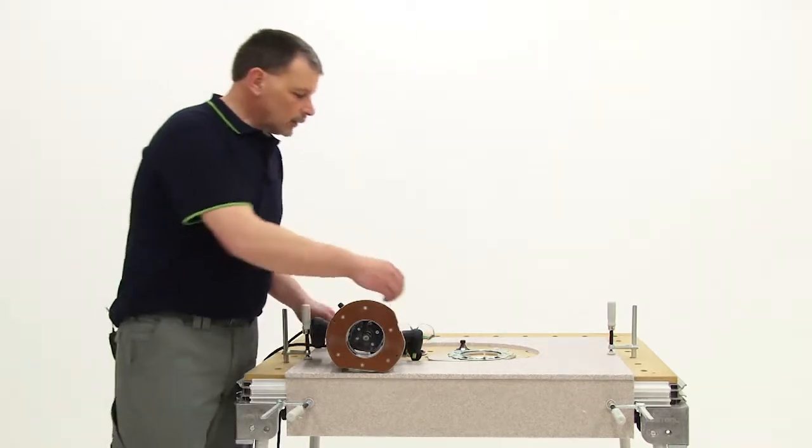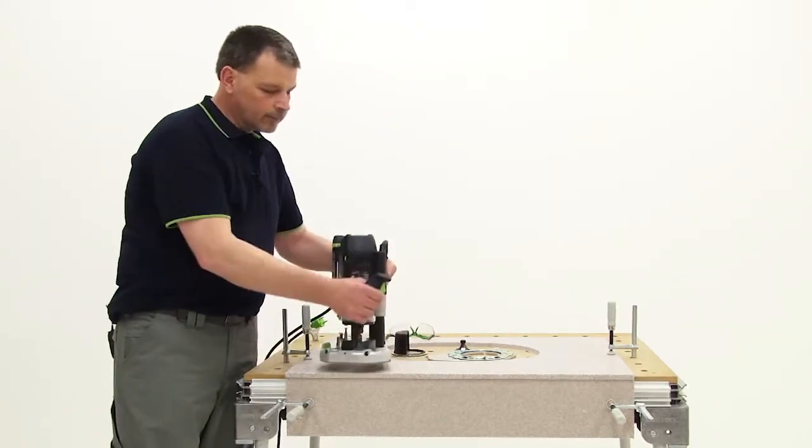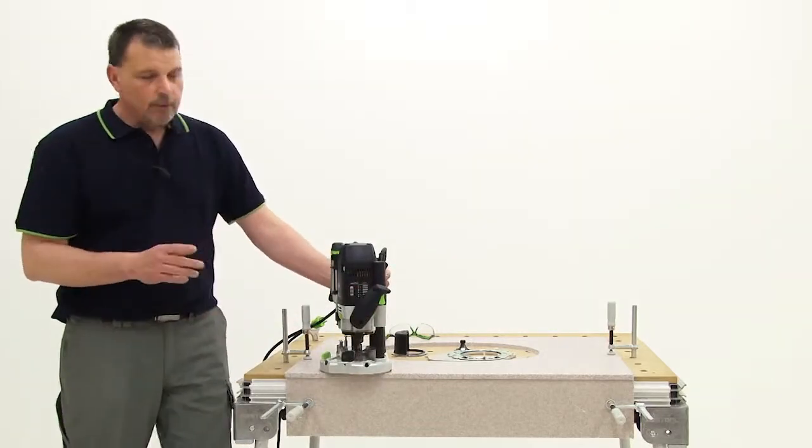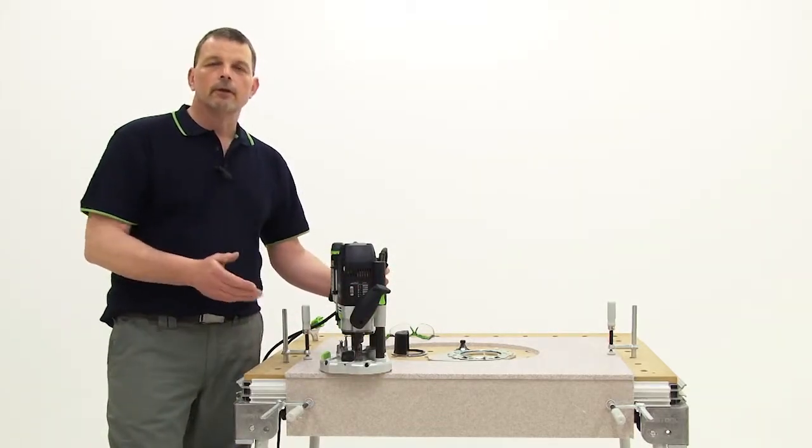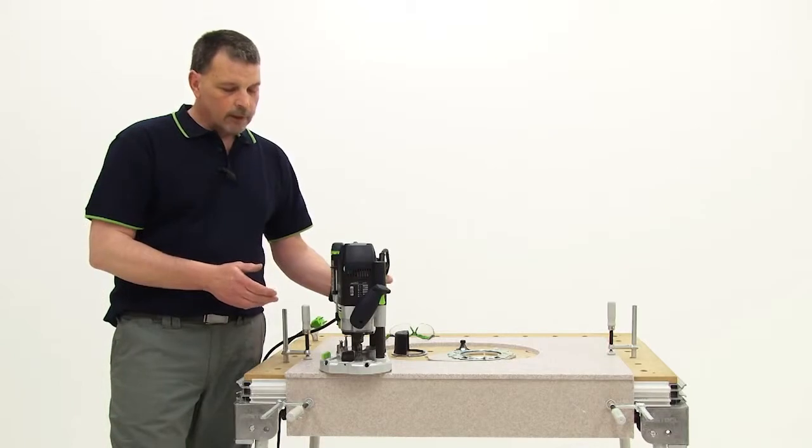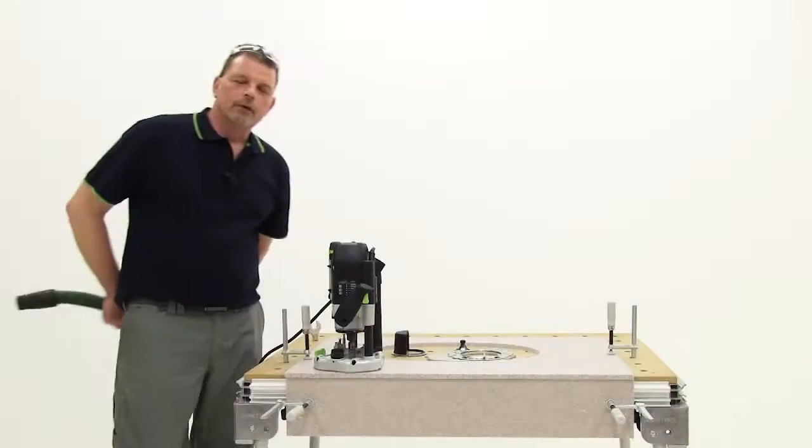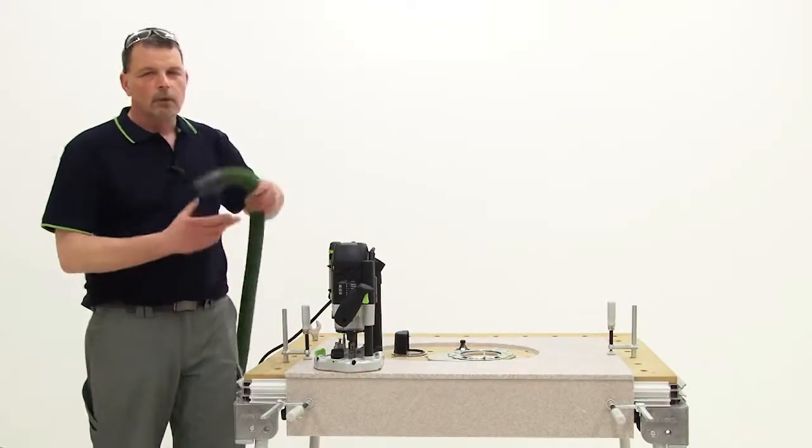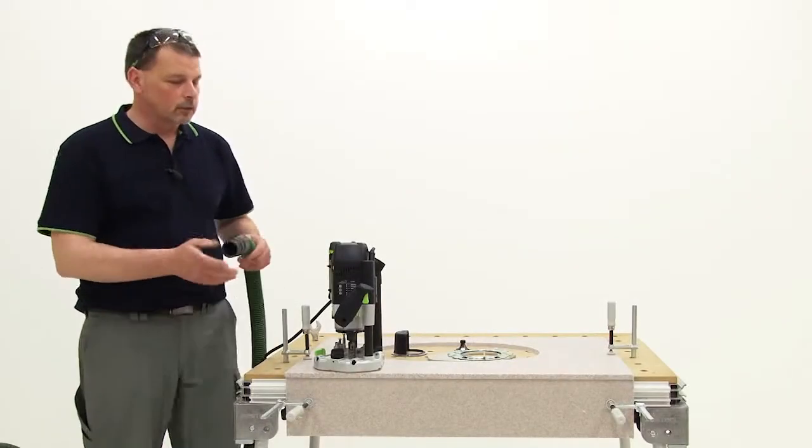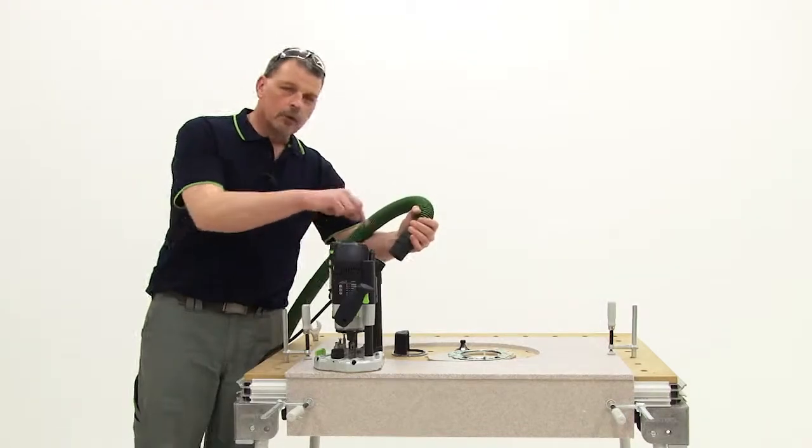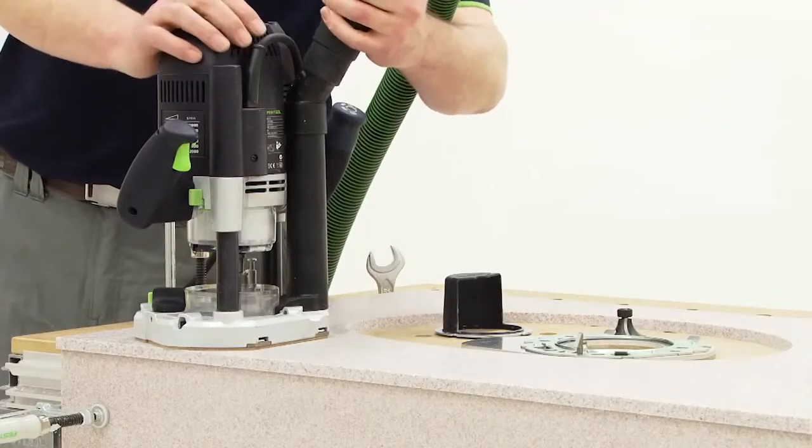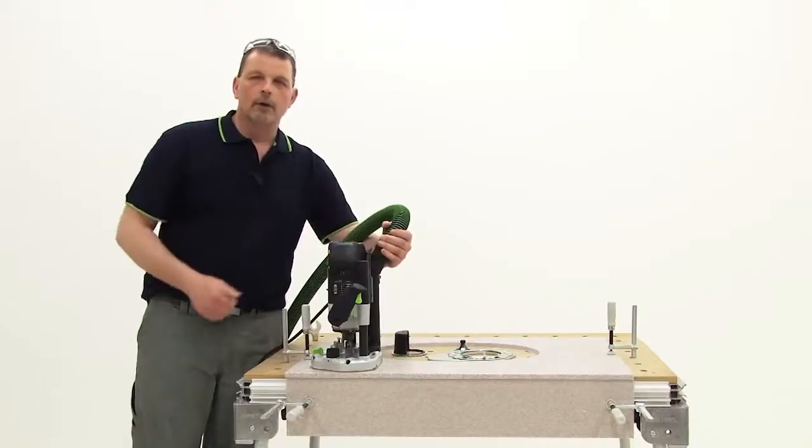For this example we're going to use the 2200. I have a couple of options of how I can do this but what we're going to be doing next is plunge the router and we can then trim the first section of material. For enhanced dust extraction we're using a 36mm hose on the 2200. Remember 27 on the inside, 36 firmly on the outside.